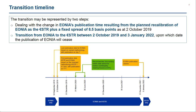You can look at this in two steps. On the 2nd of October, the publication time of EONIA will change from same-day end-of-day to the next morning at 9 o'clock. That publication time change is triggered by the go-live of Euro STR. Euro STR will therefore be published for the first time on the morning of the 2nd of October, and in sync, EONIA will be recalibrated to equal Euro STR plus 8.5 basis points. EONIA will cease to be published on the 3rd of January 2022, end of 2021, and we will have a transition period in between.